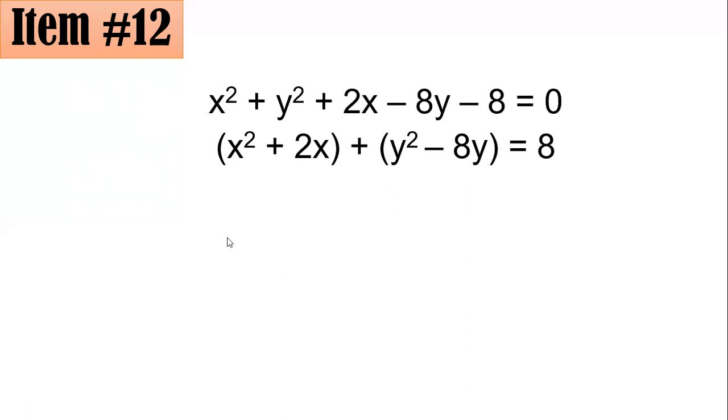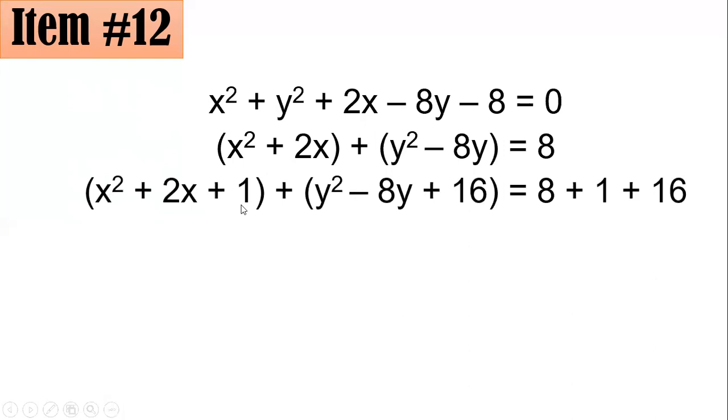So completing the square here, divide this by 2, then squaring it. So 2 divided by 2, it's 1. Then square, that's plus 1 here. And for here, negative 8 divided by 2, that's negative 4. Quantity squared, plus 16. So on the left-hand side, I added 1 and 16. That's the reason why, by addition property of equality, I should also add 1 and 16 on the right-hand side.